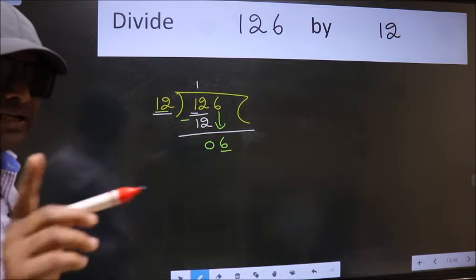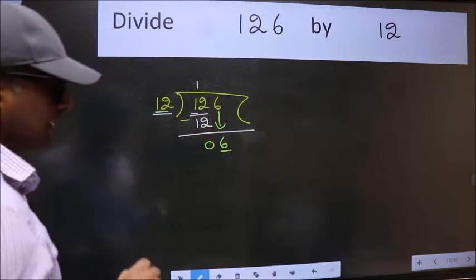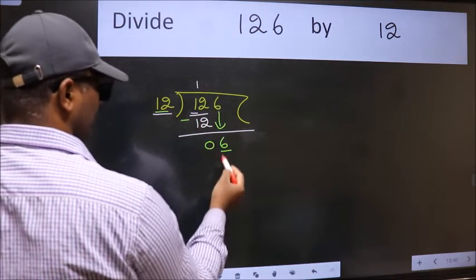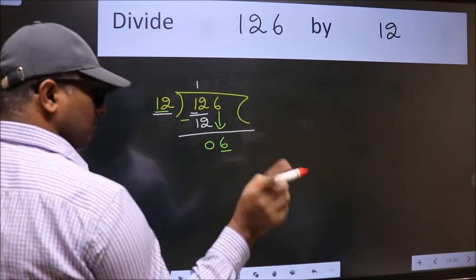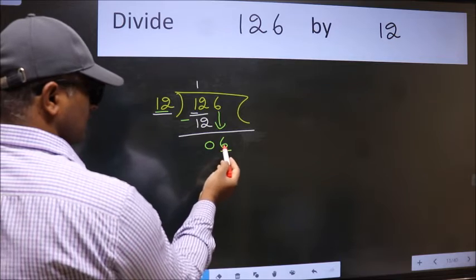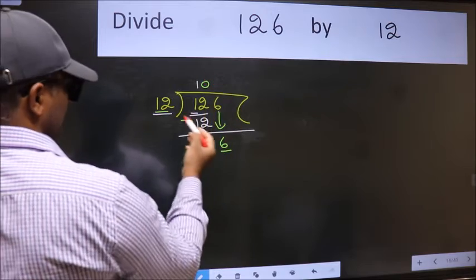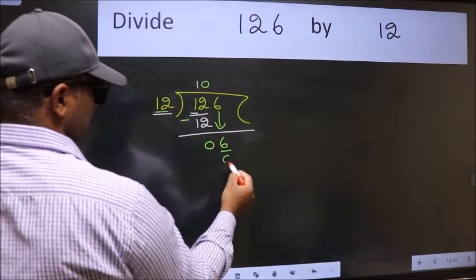Instead of that, what we should think of doing is which number should we take here? If I take 1 we will get 12. But 12 is larger than 6. So what we do is we take 0 here. So 12 into 0, 0.